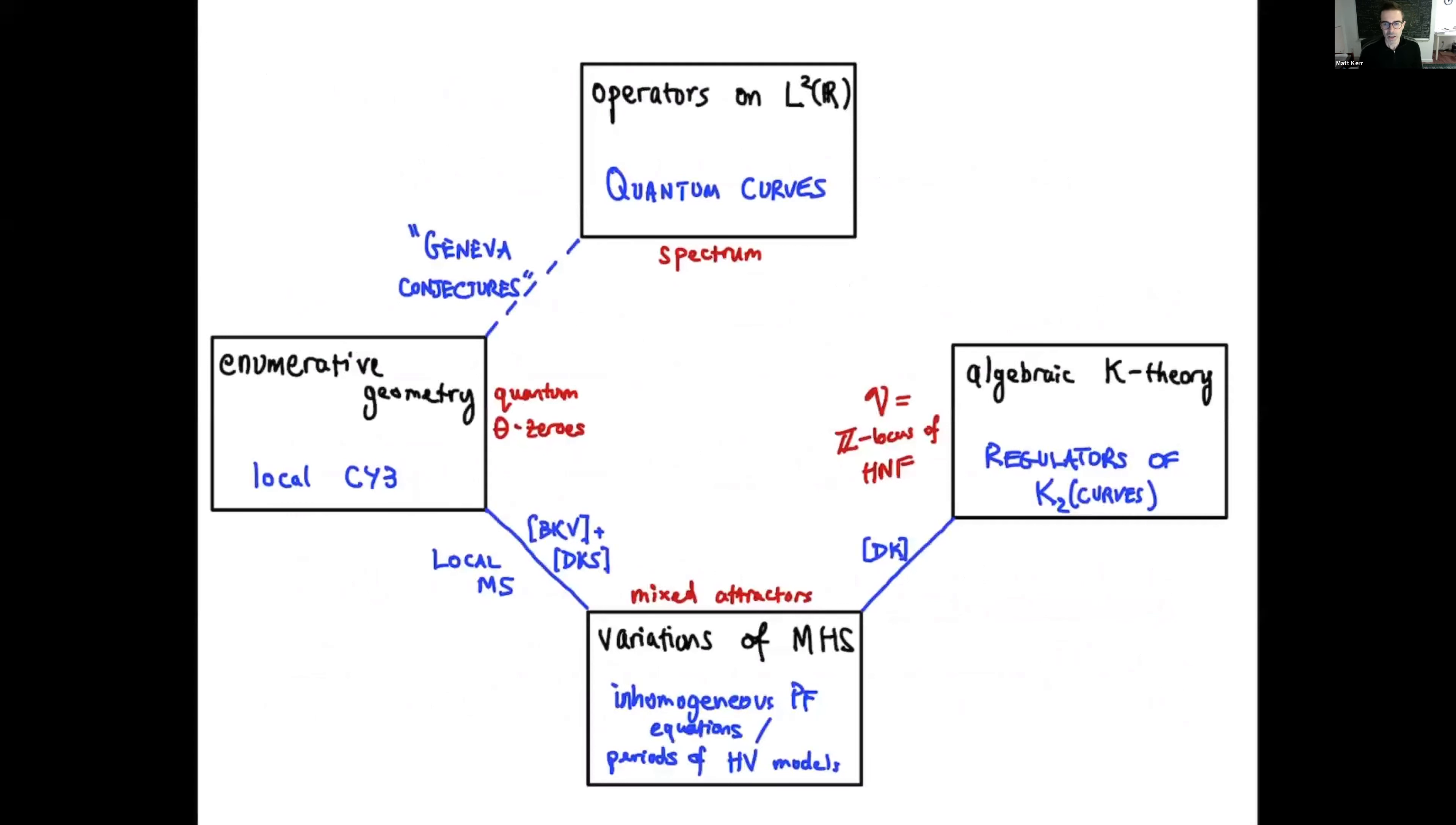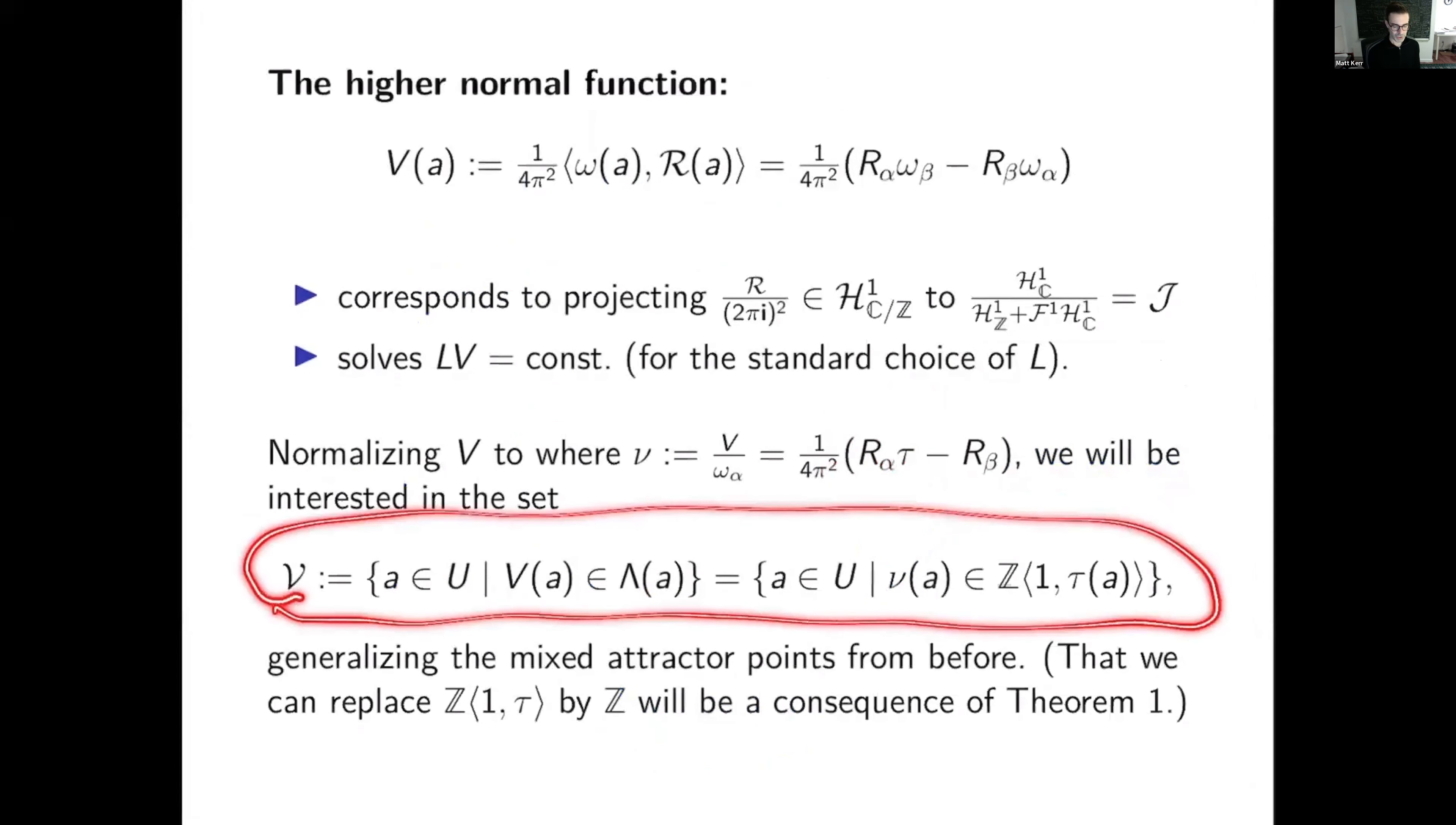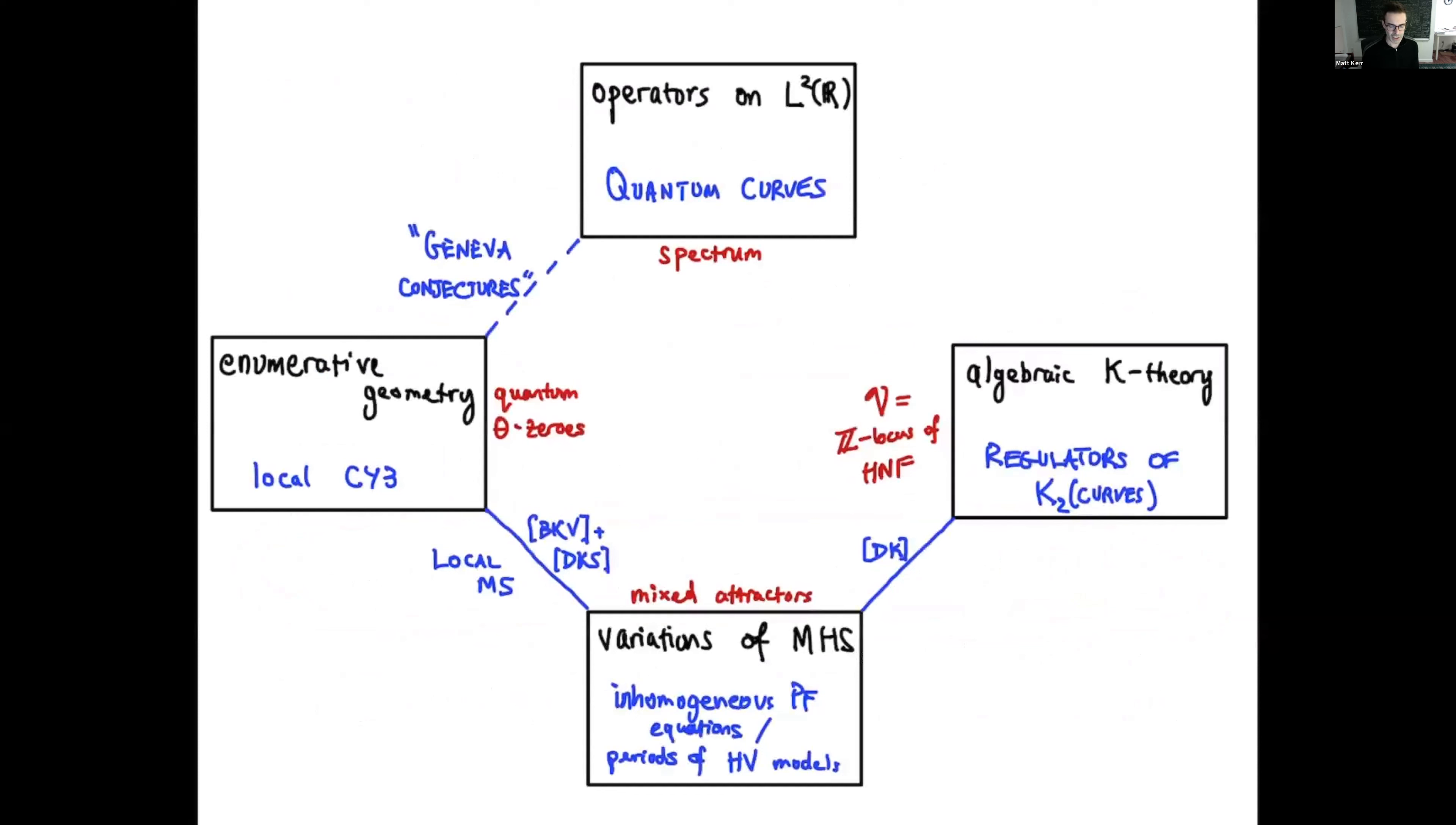All right. So where are we at this point? We have partially completed the connection on the right-hand side of the diagram. We have algebraic K theory and regulators of K2 of our elliptic curves. And we have this V, this set from the last page, which is going to correspond to the Z locus of this higher normal function. And it's a consequence of, well, I mean, it's more or less a variant of the definition we gave of mixed attractors from before. So this is fairly direct. We don't need any reference to tell us what this link is. But if you want to actually prove that regulators of K2 of curves identify with periods of Hori-Vafa models, that's in my paper with Chuck Duran from K11.